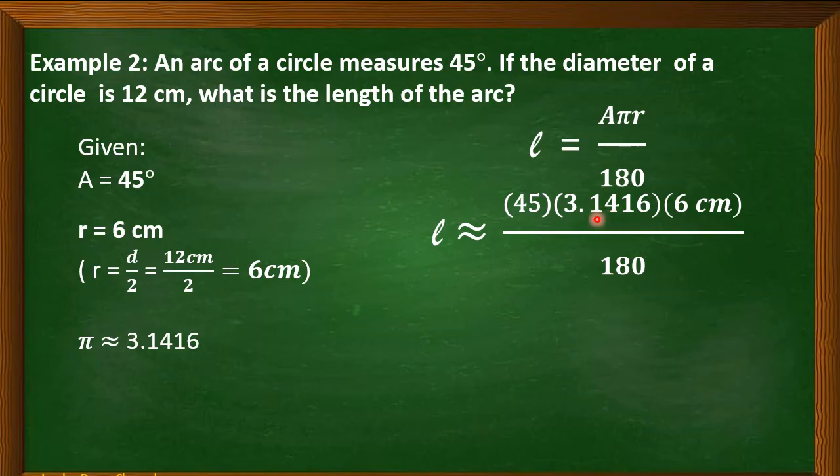Our A is equal to 45. Approximate value of pi is 3.1416. And the value of R is 6 cm. Then, you copy the denominator 180.